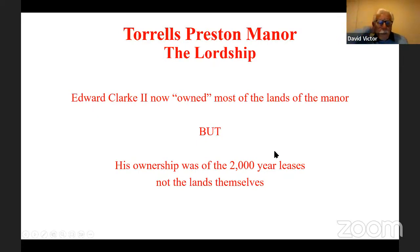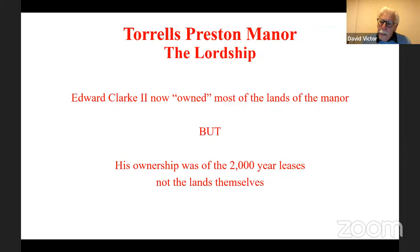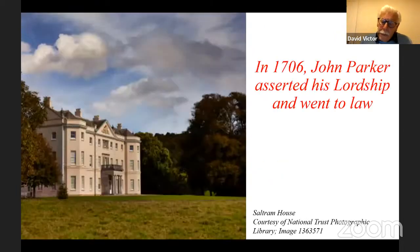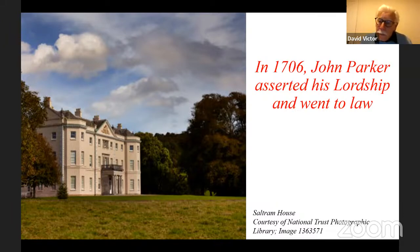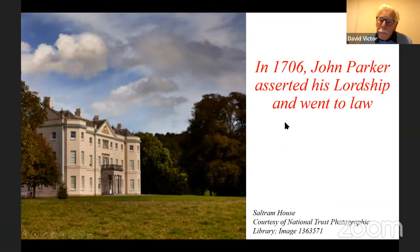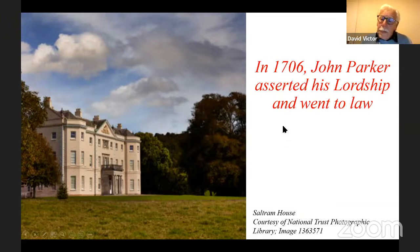Edward Clark II was now in a very happy situation — he had all kinds of lands that he had got hold of and started acting almost as if he owned them. But of course he didn't really own the land; everything was on 2,000-year leases. This caused a certain amount of problem, and in particular in 1706, John Parker — the latest of the Parkers — asserted his lordship over these lands and went to Chancery to prove that he was still the lord. And he won. For the next hundred years, the Parkers remained as lords of the manor of Torrells Preston.